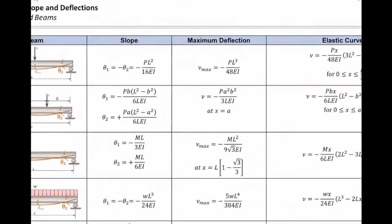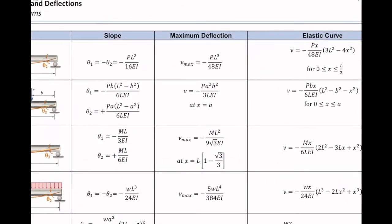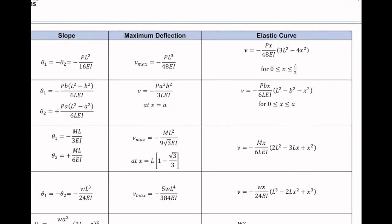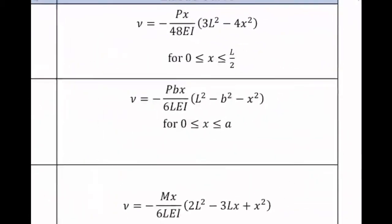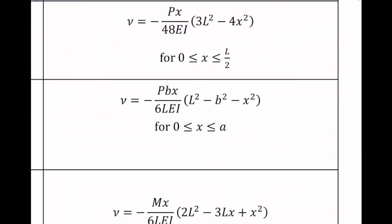There are three values here. Slope, maximum deflection, and elastic curve. Which one should I use? Not slope, because I'm looking for deformation. Should I use the maximum deformation or elastic curve? Maximum deformation gives me the maximum deflection at a certain point. I'm not looking for the maximum deformation. I'm looking for deformation at point D. So I need to use the elastic curve. This is the equation that I need to write down.